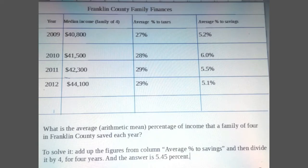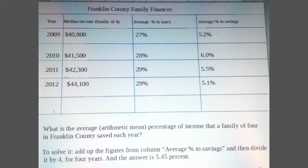Now the question is: what is the average arithmetic mean percentage of income that a family of four in Franklin County saved each year? To solve it, add up the figures from the column 'average percent to savings' and then divide by four for the four years. The answer is 5.45%.